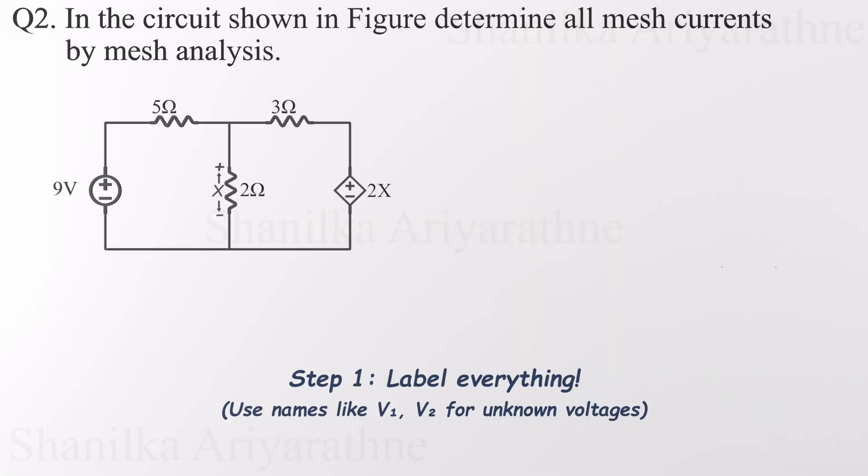First up, label the voltage across each component. The voltage sources are already labeled, so we'll label the voltages across the resistors as V1, V2, and V3. That wraps up step one.